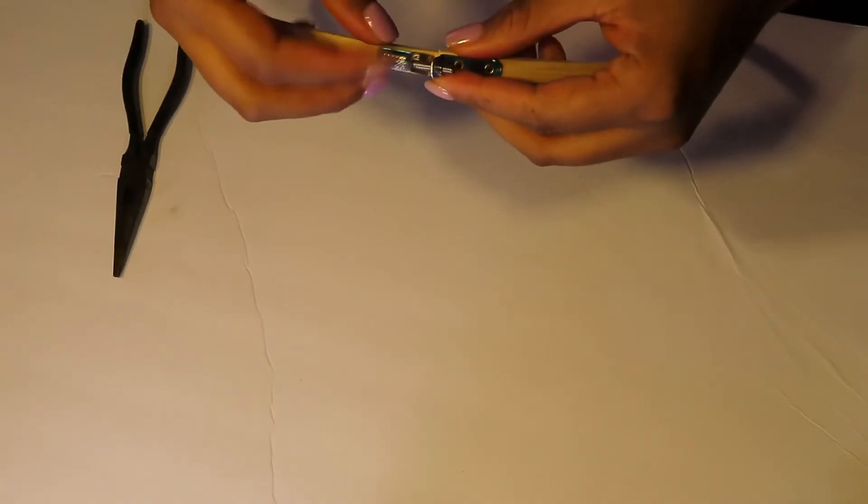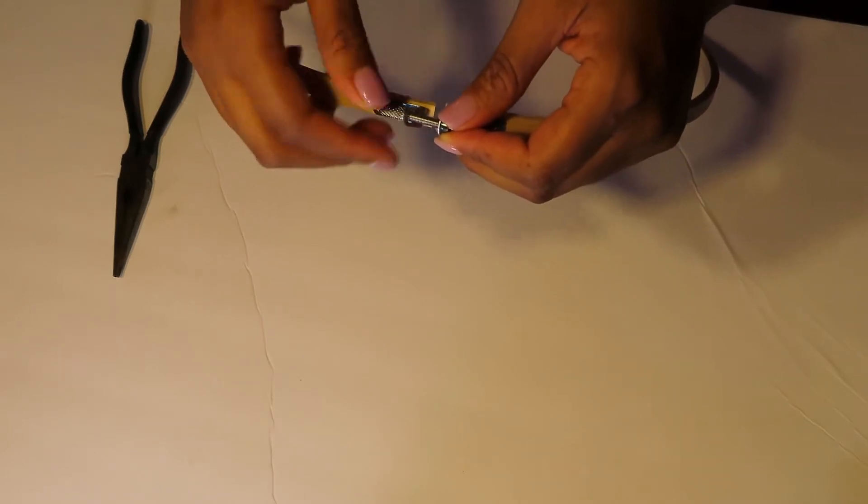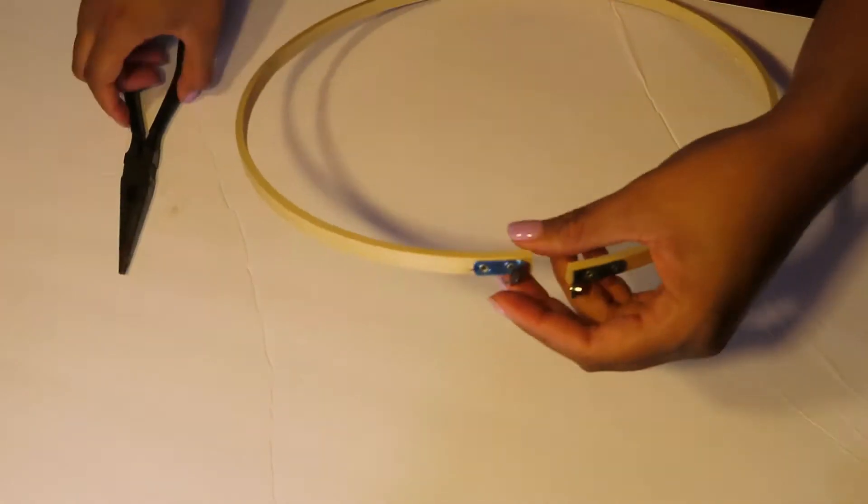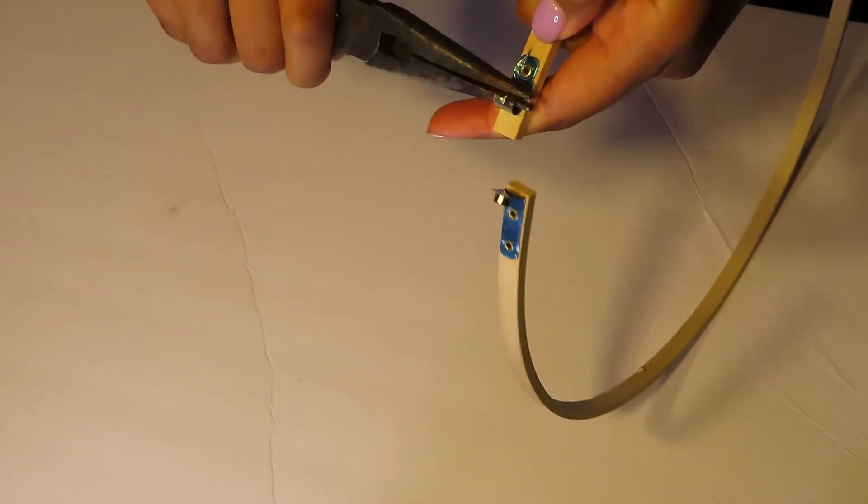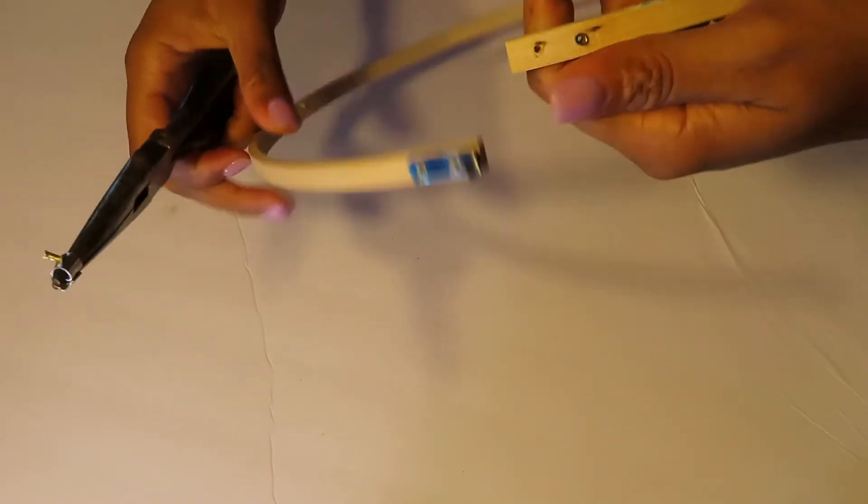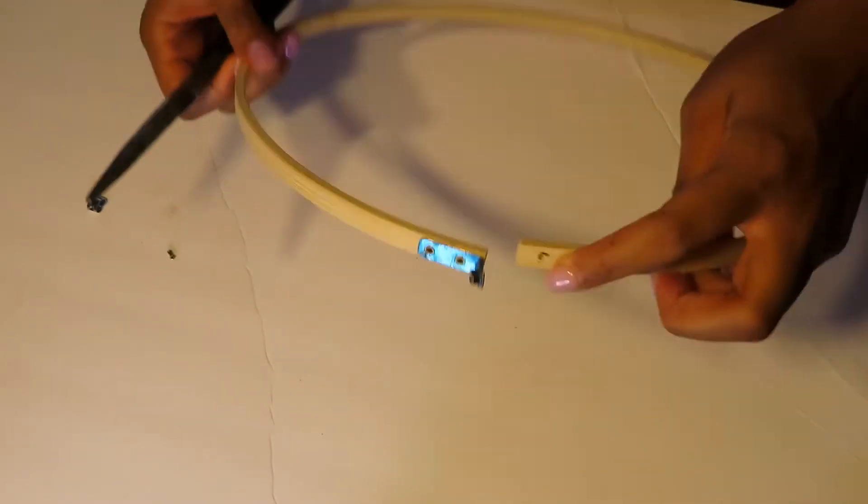The first thing I did was unscrew the latch from the embroidery hoop. I took some needle nose pliers and pulled the wire backing off of each side.